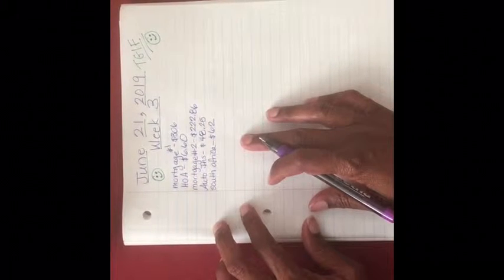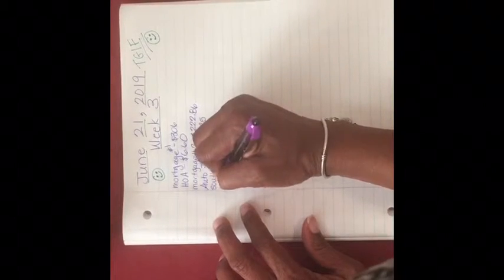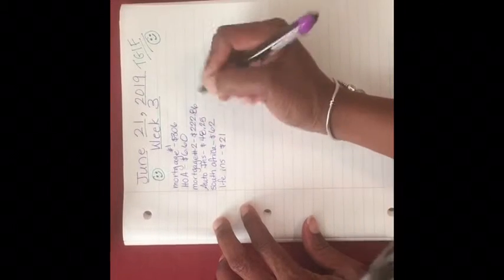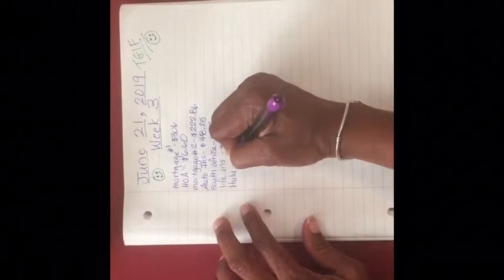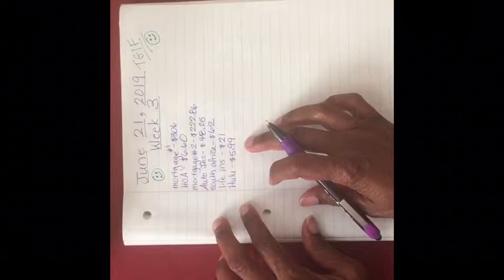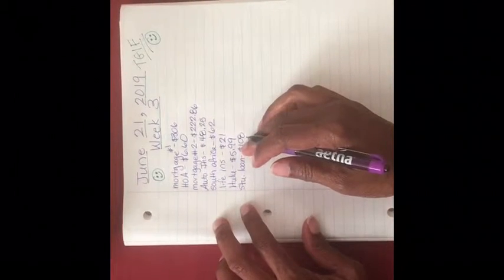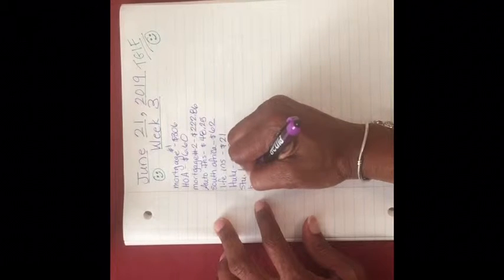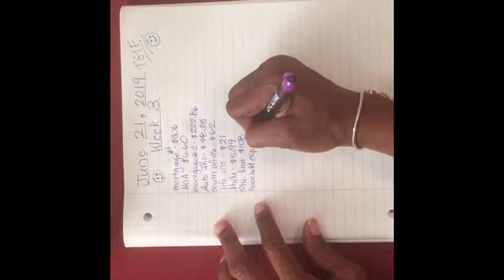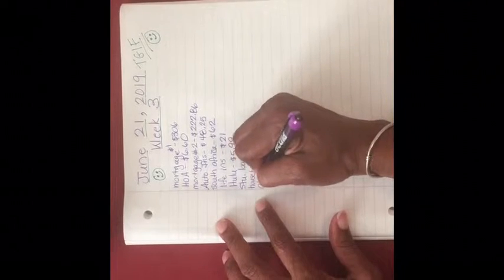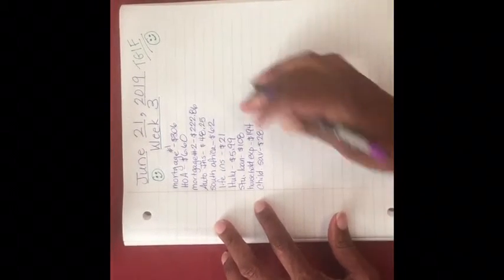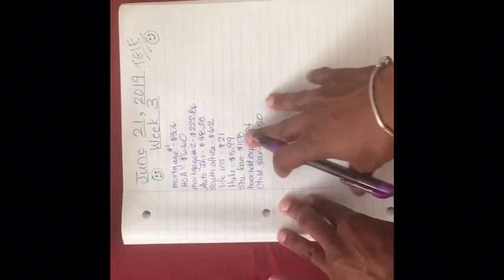Next, we have the South Africa trip for $62. Then we have the life insurance policy, and I will set aside $21 for that one. Next, we have Hulu for $5.99. Student loan for $108. Then I have my household expenses. Remember, I take that out in cash. That is $194.